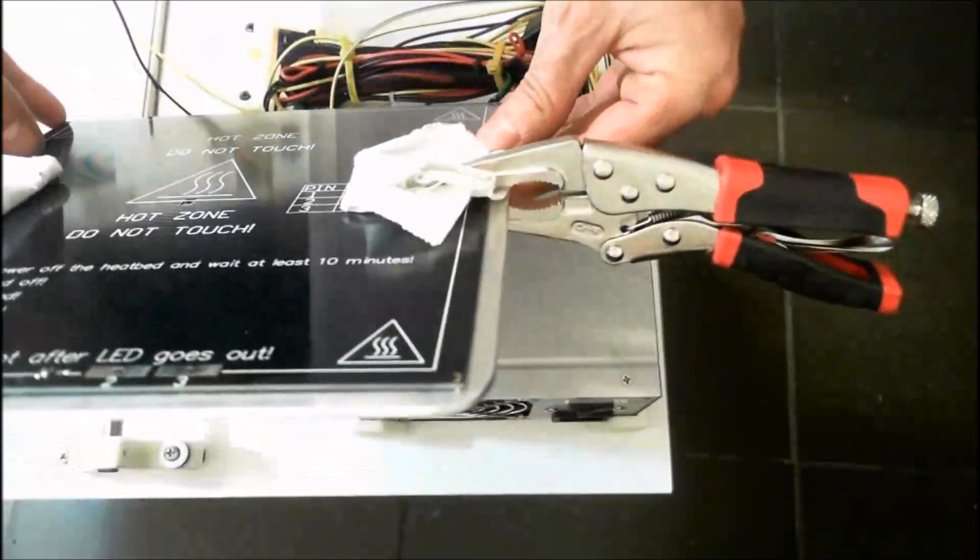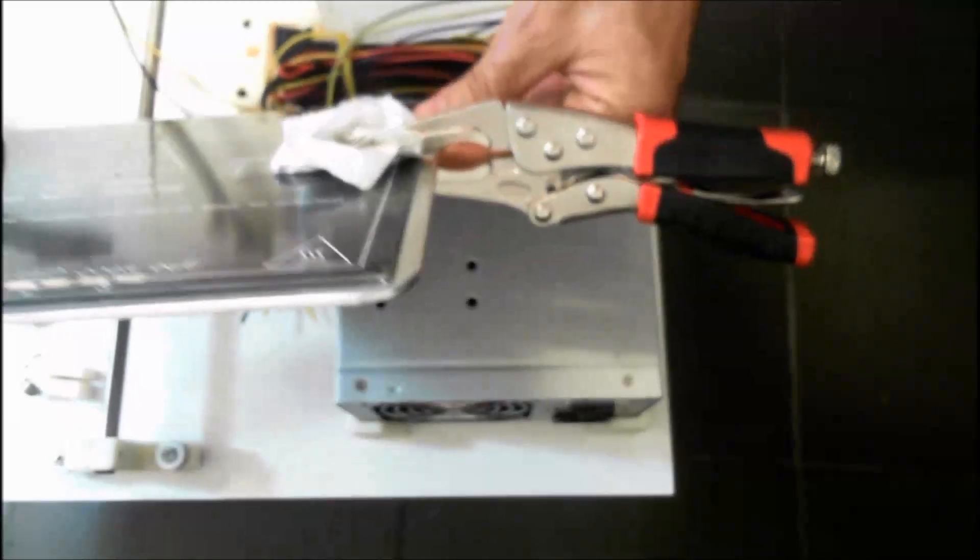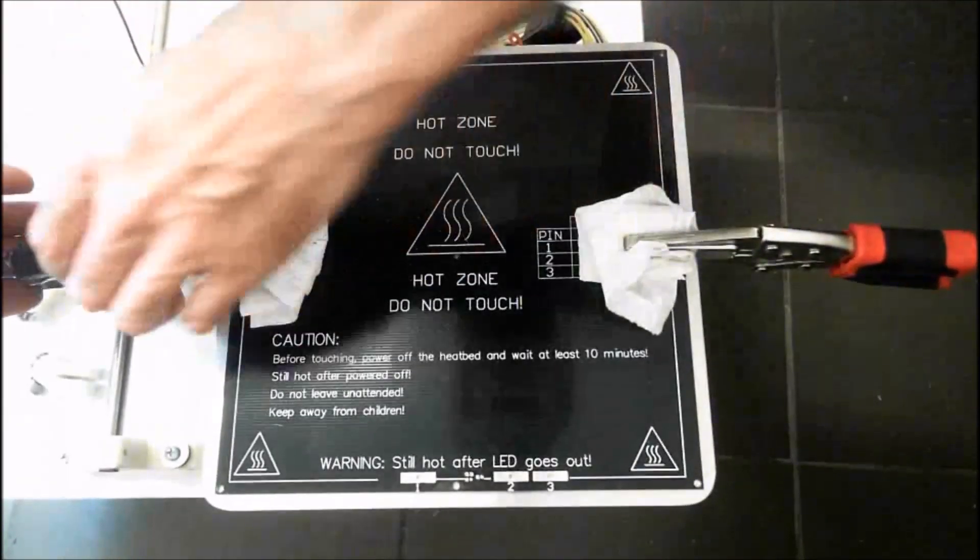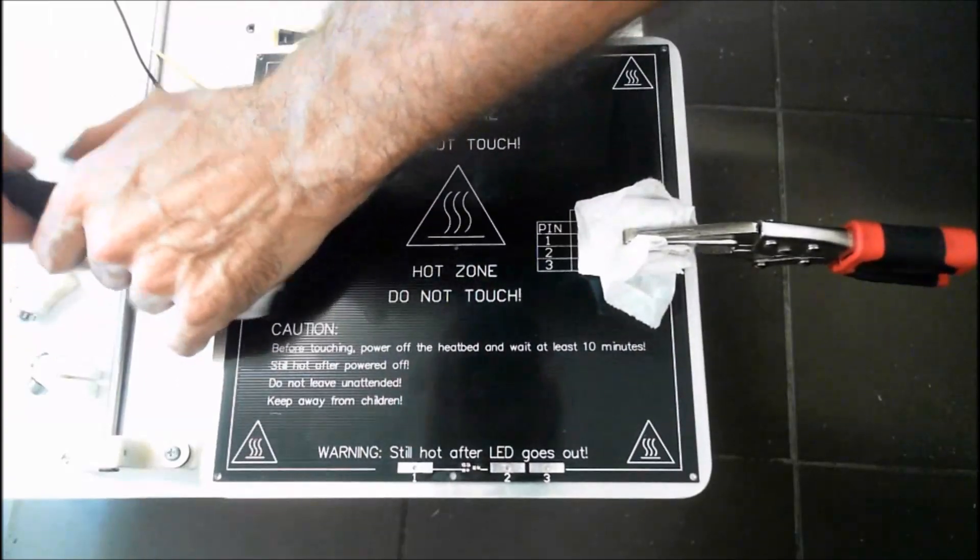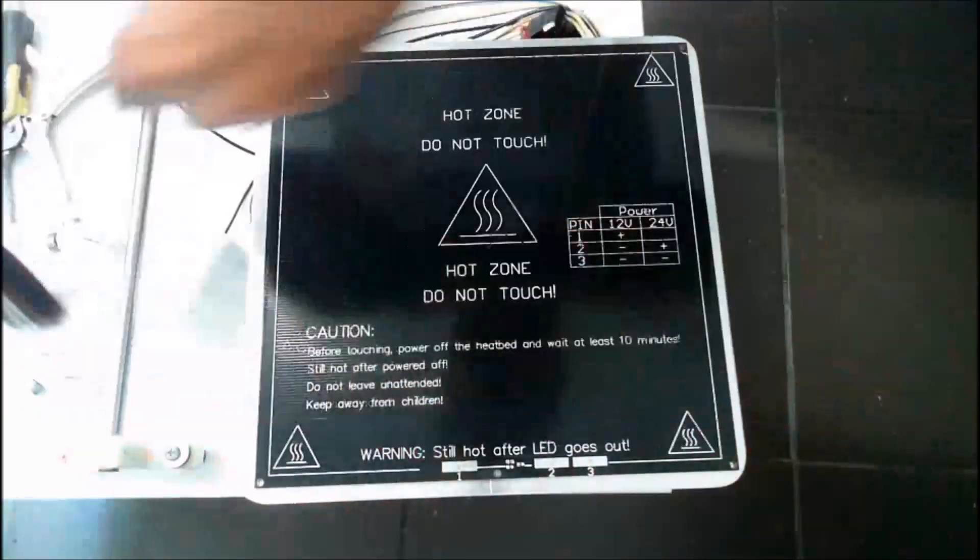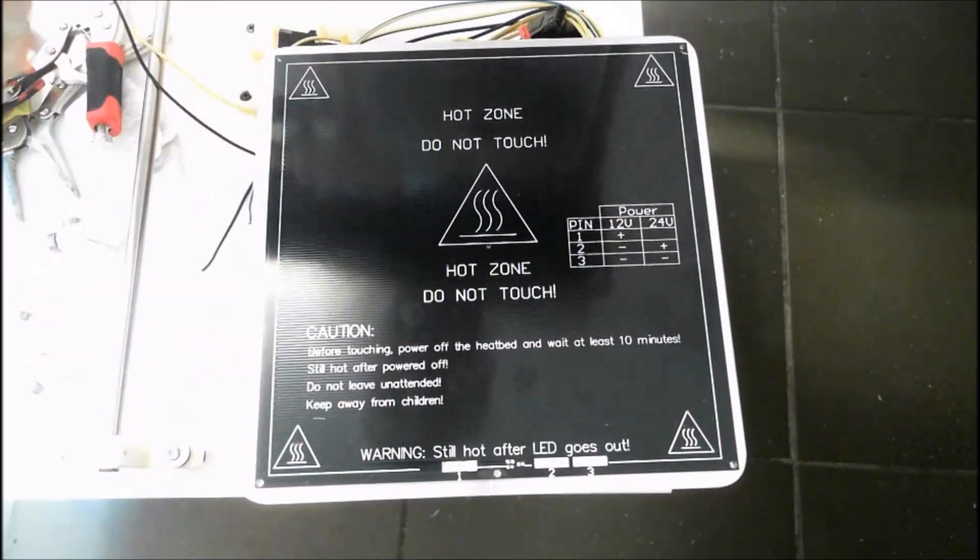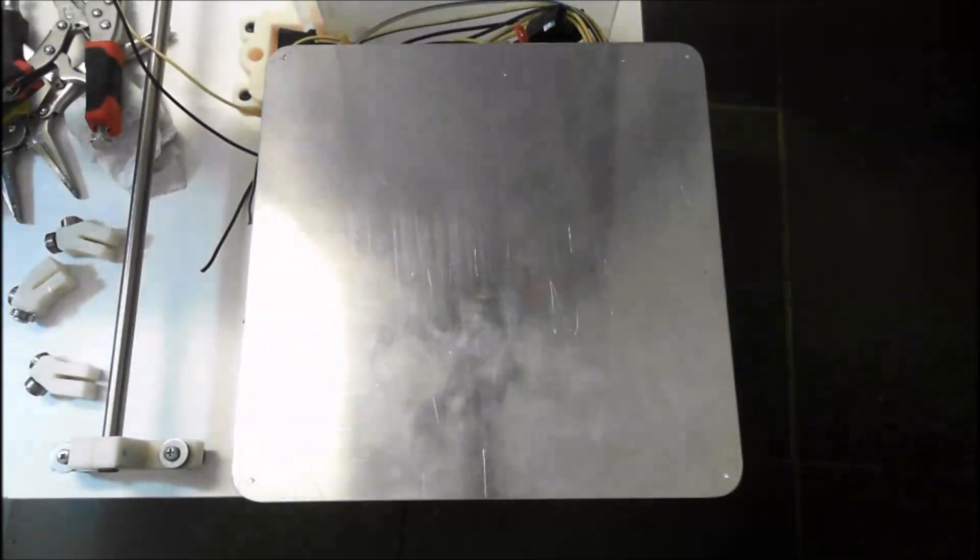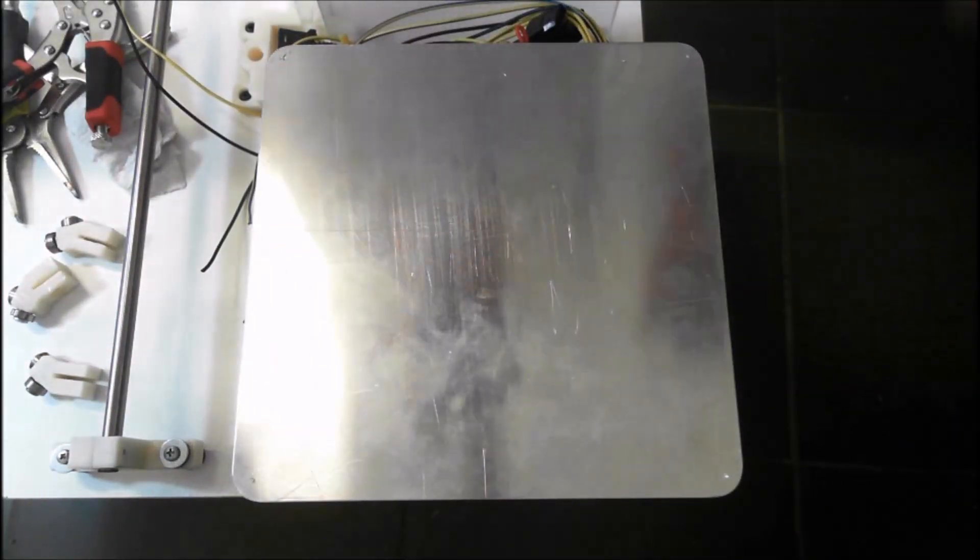We clamp the heat bed with paper on top to protect it and some small vice grips. Now we can take the heat bed off, mark the holes, and we're going to drill out those holes now.